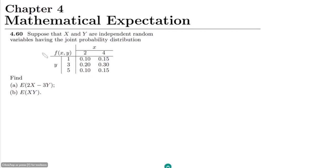Welcome back. This is question 4.60 of chapter 4. The statement is: suppose that X and Y are independent random variables having the joint probability distribution which has been written in the form of a table. On the basis of this table we have to find part A and part B of our question.